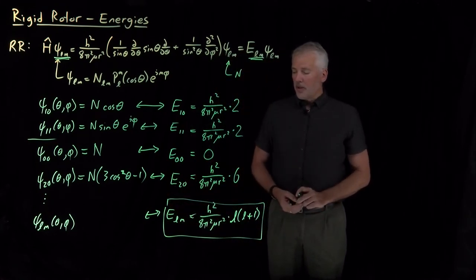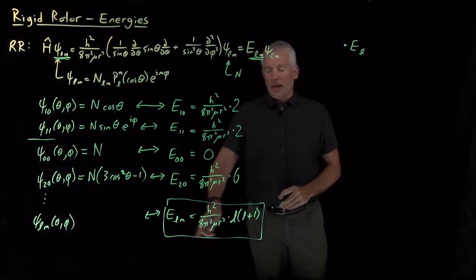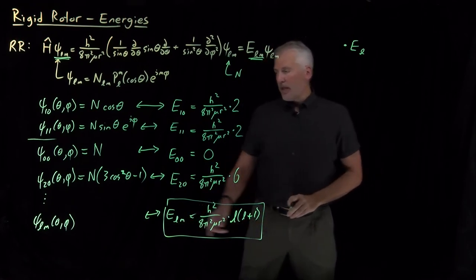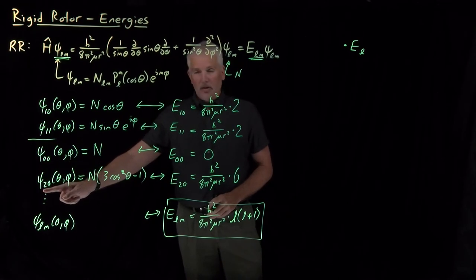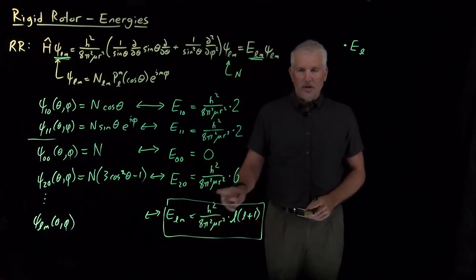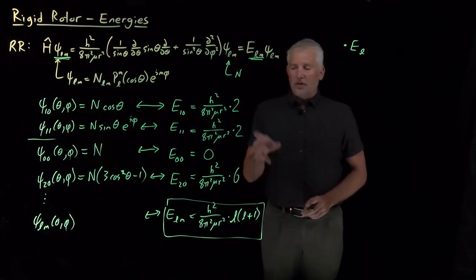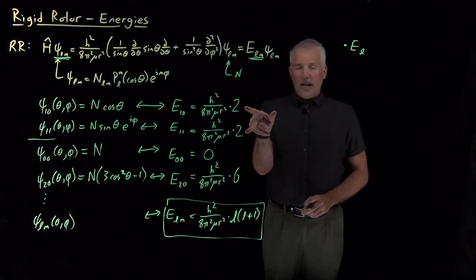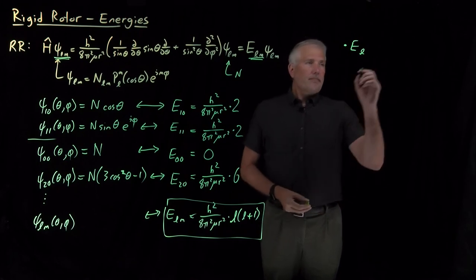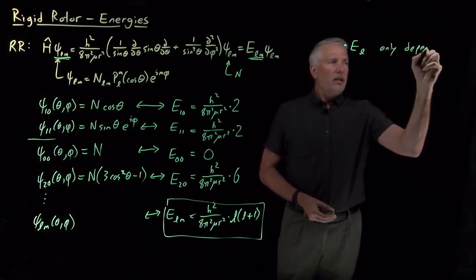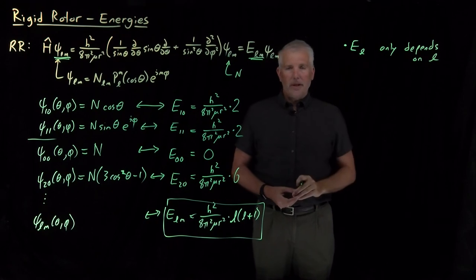A couple of things to point out about that equation. Number one, we can just call that E sub L, not E sub L and M. If I want to know the energy of wave function 2,0 or 0,0, those have an index, a quantum number L and a quantum number M, but M doesn't show up anywhere in this energy. So, it turns out the value of M is irrelevant. That's why the 1,0 and the 1,1 wave functions both turned out to have the same energy as each other. Their M values were different, but the values of L were the same, so they end up having the same energy. So, we normally just write that E sub L, not E sub L M, because it ends up only depending on the value of L.